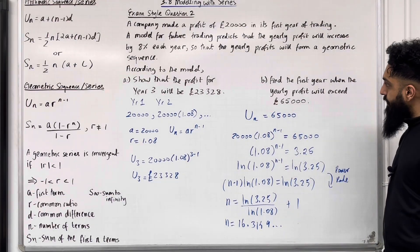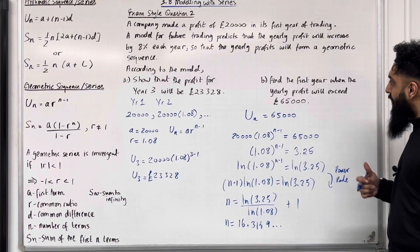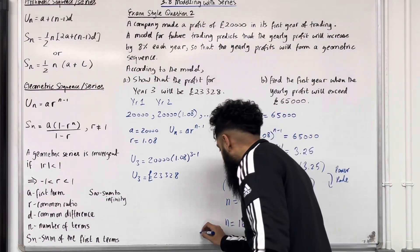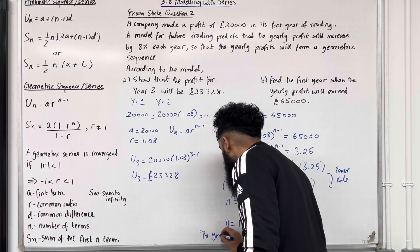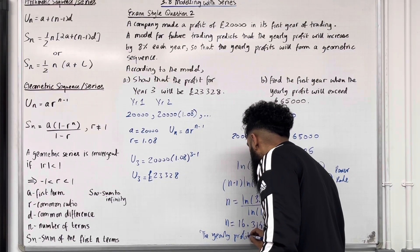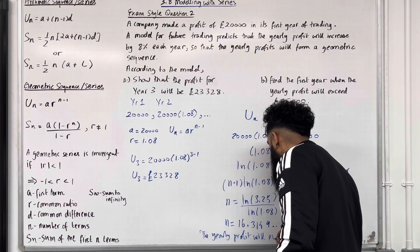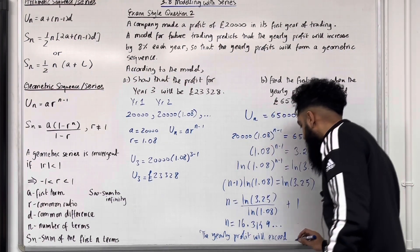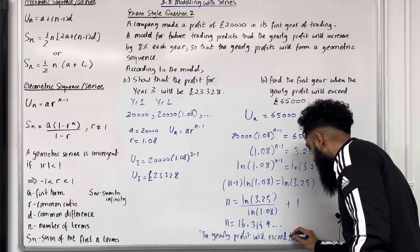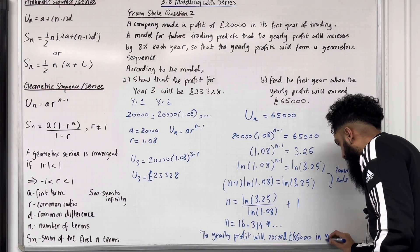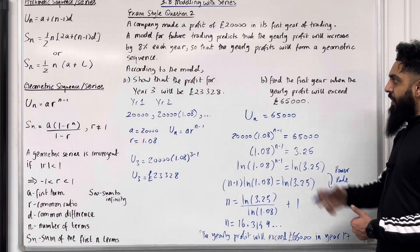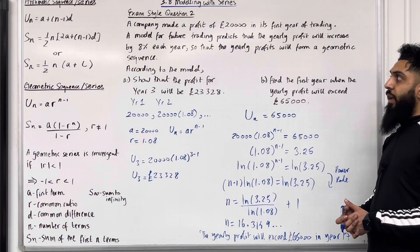Since n ≈ 60.31, we need the next whole year for the profit to exceed £65,000. So the yearly profit will exceed £65,000 in year 61. That completes part B of exam-style question 2.